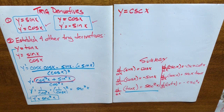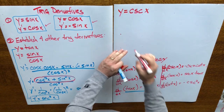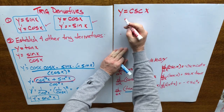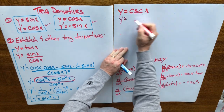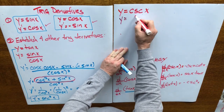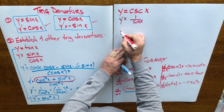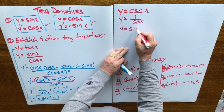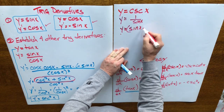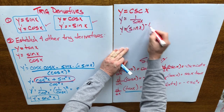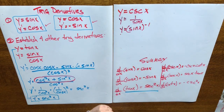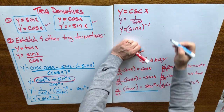Now when we take a look at cosecant x, we'll follow a similar procedure. We'll use an identity to replace cosecant x as 1 over sin x. So y is equal to sine of x to the exponent negative 1. Now we can use the chain rule on that and take its derivative.